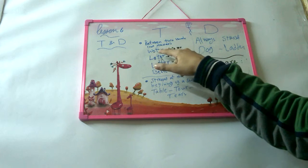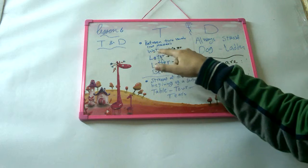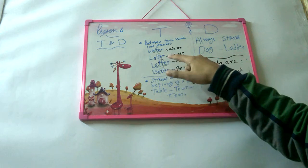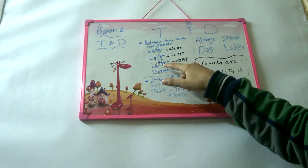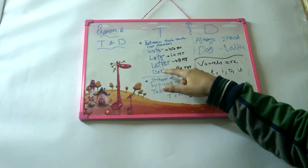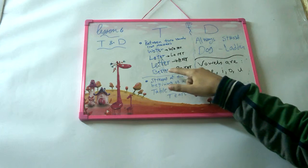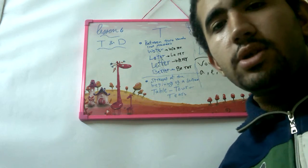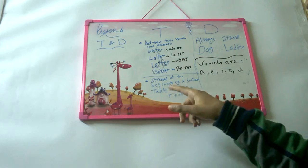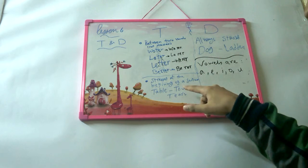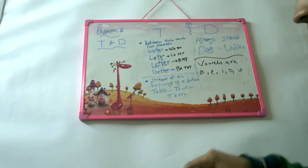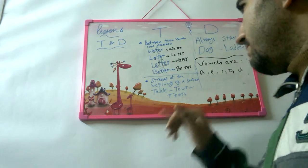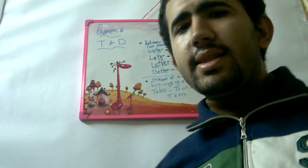So in 'water,' T is between A and E. In 'letter,' T is between A and A. In 'better,' T is between A and A — all vowels on each side. Normally, we do stress the T when it comes at the beginning of a word, like 'table,' 'tour,' 'tears.'